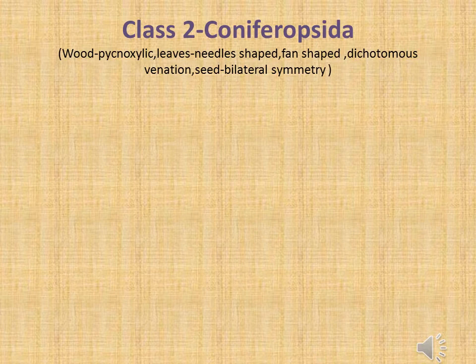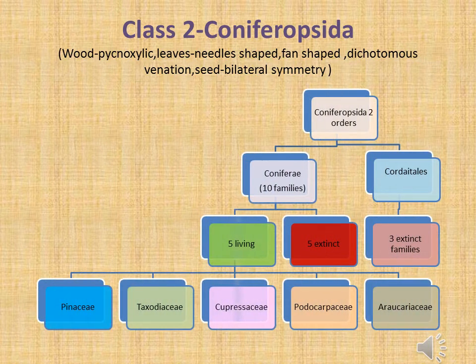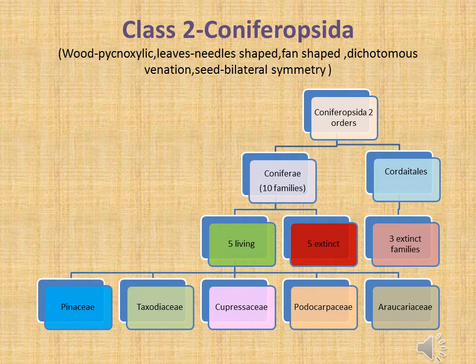Coniferopsida, in which wood is pycnoxylic, leaves are pin-shaped or needle-shaped with dichotomous venation, and instead have bilateral symmetry. Coniferopsida has 2 orders: Coniferales and Cordaitales. Cordaitales has 3 extinct families. Coniferales has 10 families, of which 5 are living and 5 are extinct. The 5 living families are Pinaceae, Taxodiaceae, Cupressaceae, Podocarpaceae, and Araucariaceae.